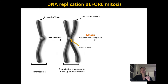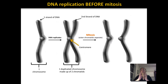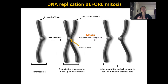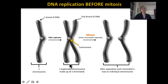It's during mitosis that these sister chromatids separate. When they separate, each strand gets its own identity and becomes its own individual chromosome. Once they're separated, we no longer call them chromatids — we call them chromosomes. The term 'chromatid' only applies when the chromosome is duplicated and looks like an X shape.